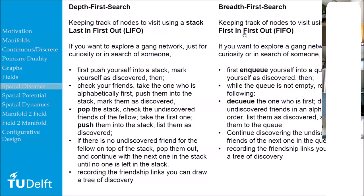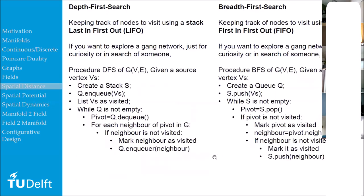Two typical data structures are used in combination with these algorithms. A stack — last in, first out — is suitable for depth-first search. A queue — first in, first out, like a queue in front of a shop — is the suitable structure for breadth-first search. These two data structures are intertwined with these algorithms, and that relation you can look at in more detail. There is also pseudocode for both algorithms that you can read.